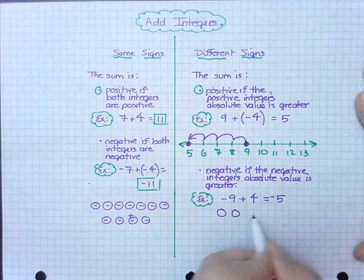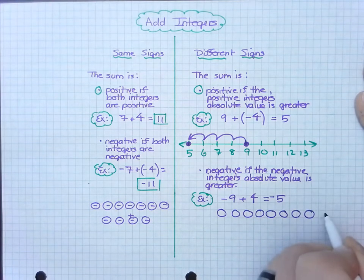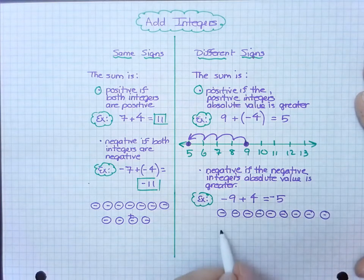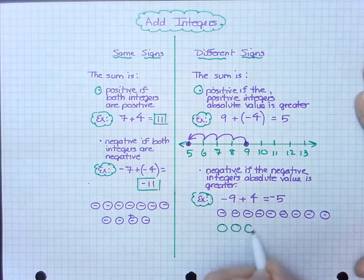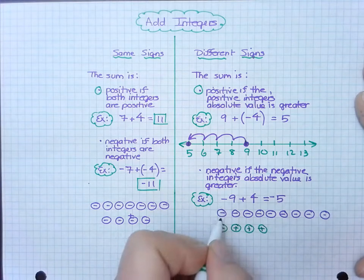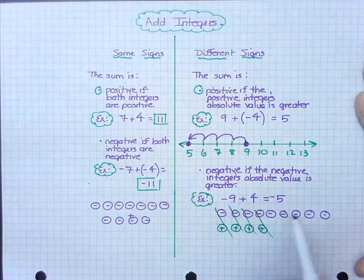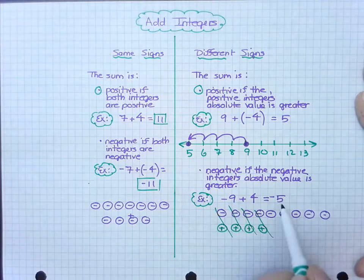Again, I can illustrate this with counters. So if I have 1, 2, 3, 4, 5, 6, 7, 8, 9 negative counters. And 4 positive counters. 1, 2, 3, 4. Notice how I'm lining them up with the negatives because I know I have zero pairs here. And look what's left over. 1, 2, 3, 4, 5 counters that they're all negative.